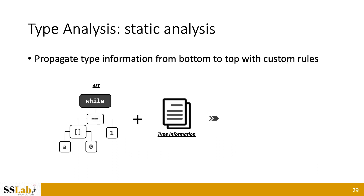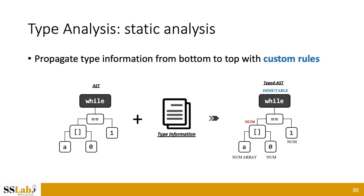We also need static analysis to assign type information to every AST node. The previous dynamic analysis gives us type information for identifiers only, so we propagate the information from bottom to top based on custom rules. For example, a number type will be assigned to an array indexing operation node when variable A is a number array. Special nodes we don't want to change will be assigned an immutable type so that the mutation engine will not select this node to mutate.